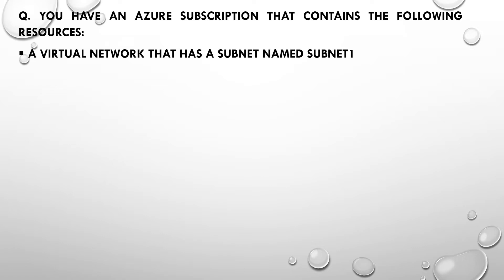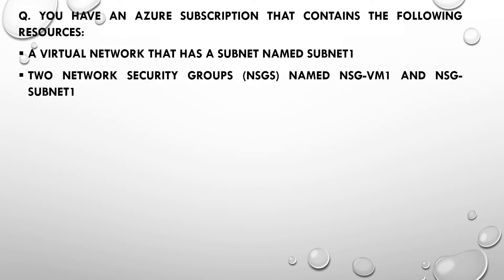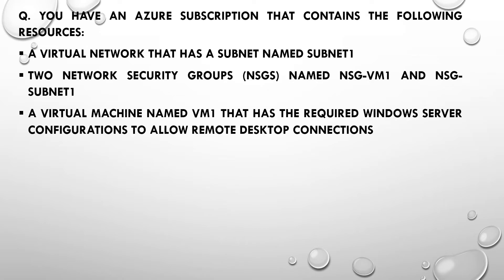A virtual network that has a subnet named Subnet 1. Two network security groups named NSG-VM1 and NSG-Subnet1. A virtual machine named VM1 that has the required Windows Server configurations to allow remote desktop connections.